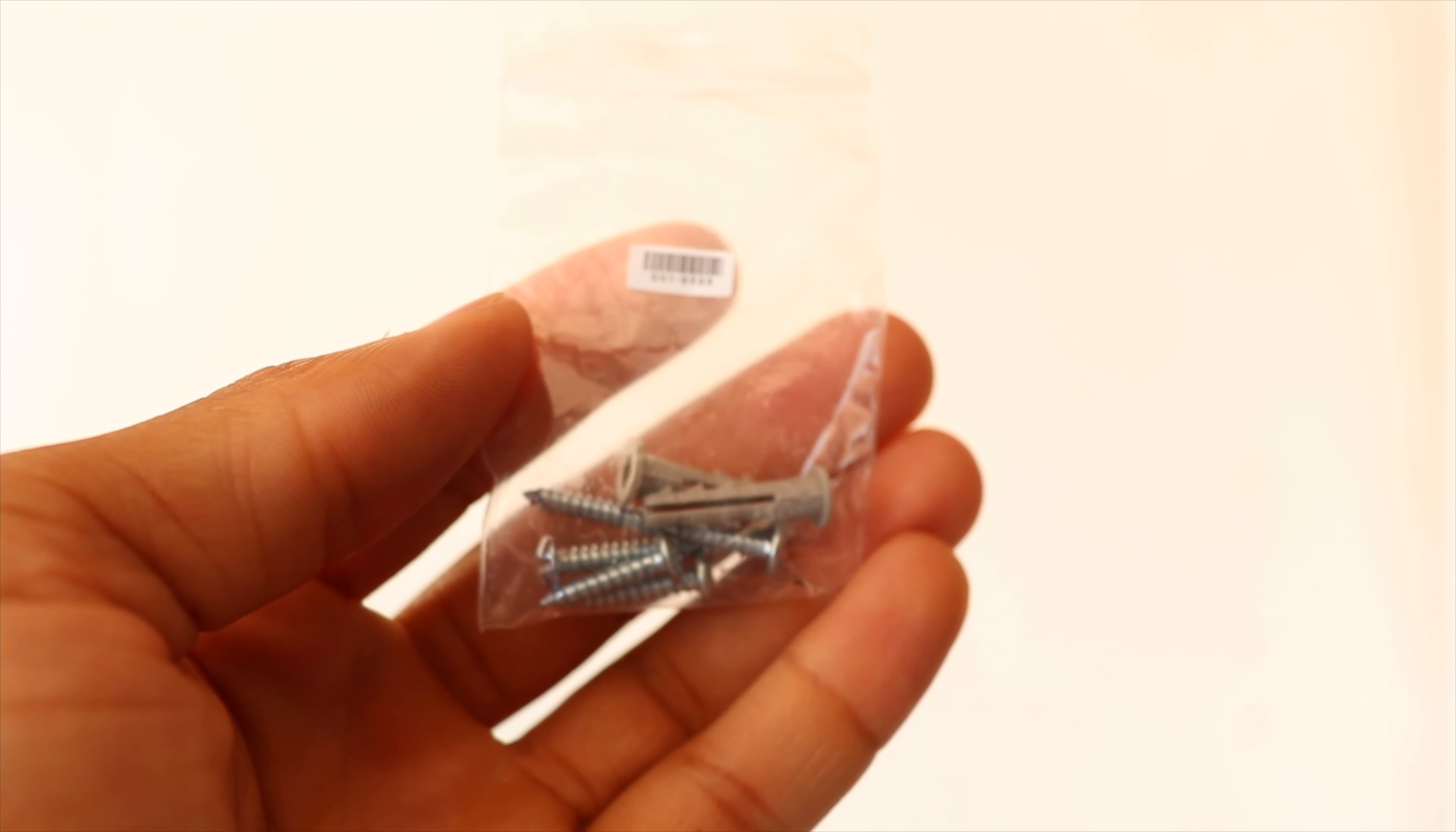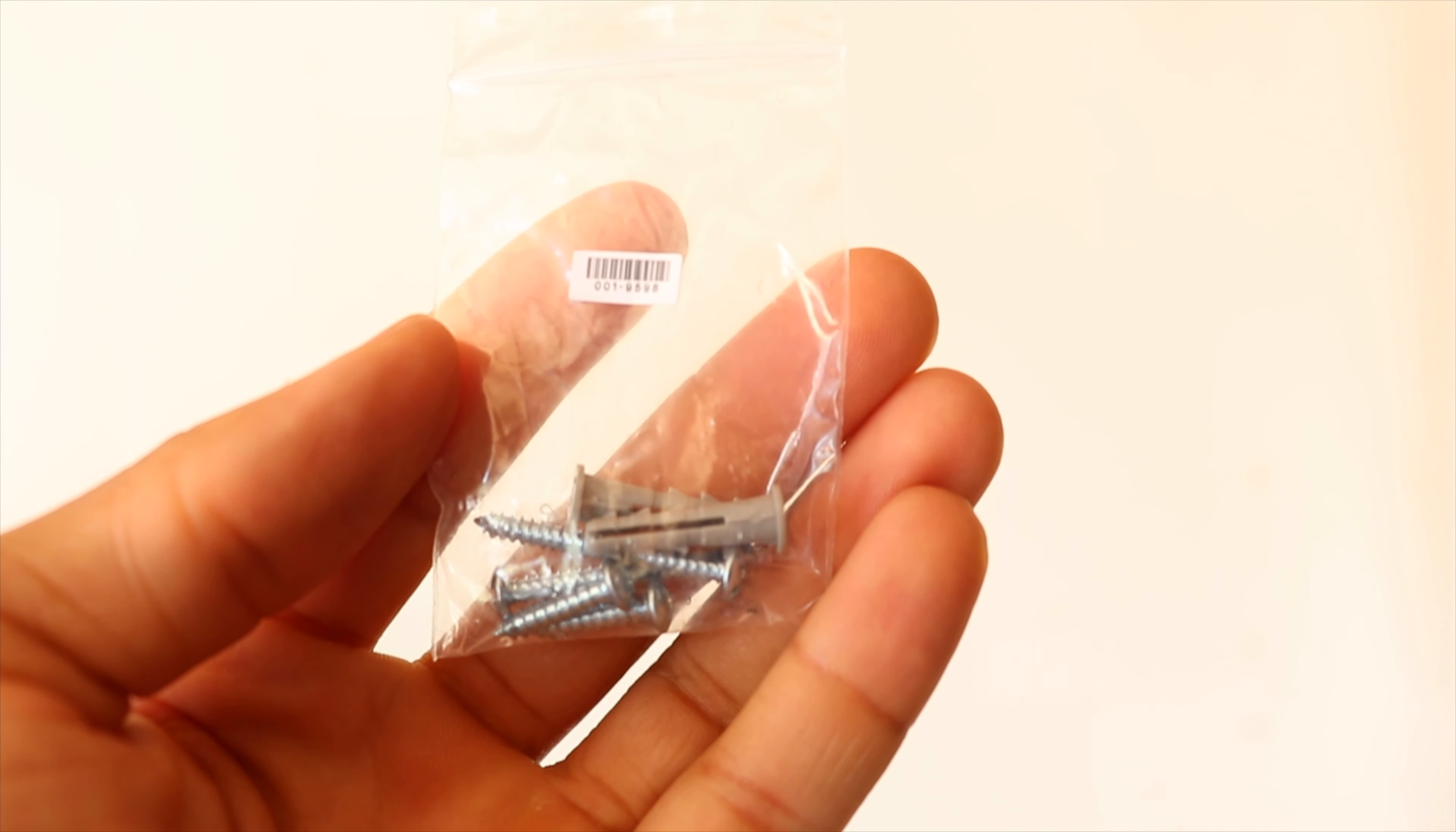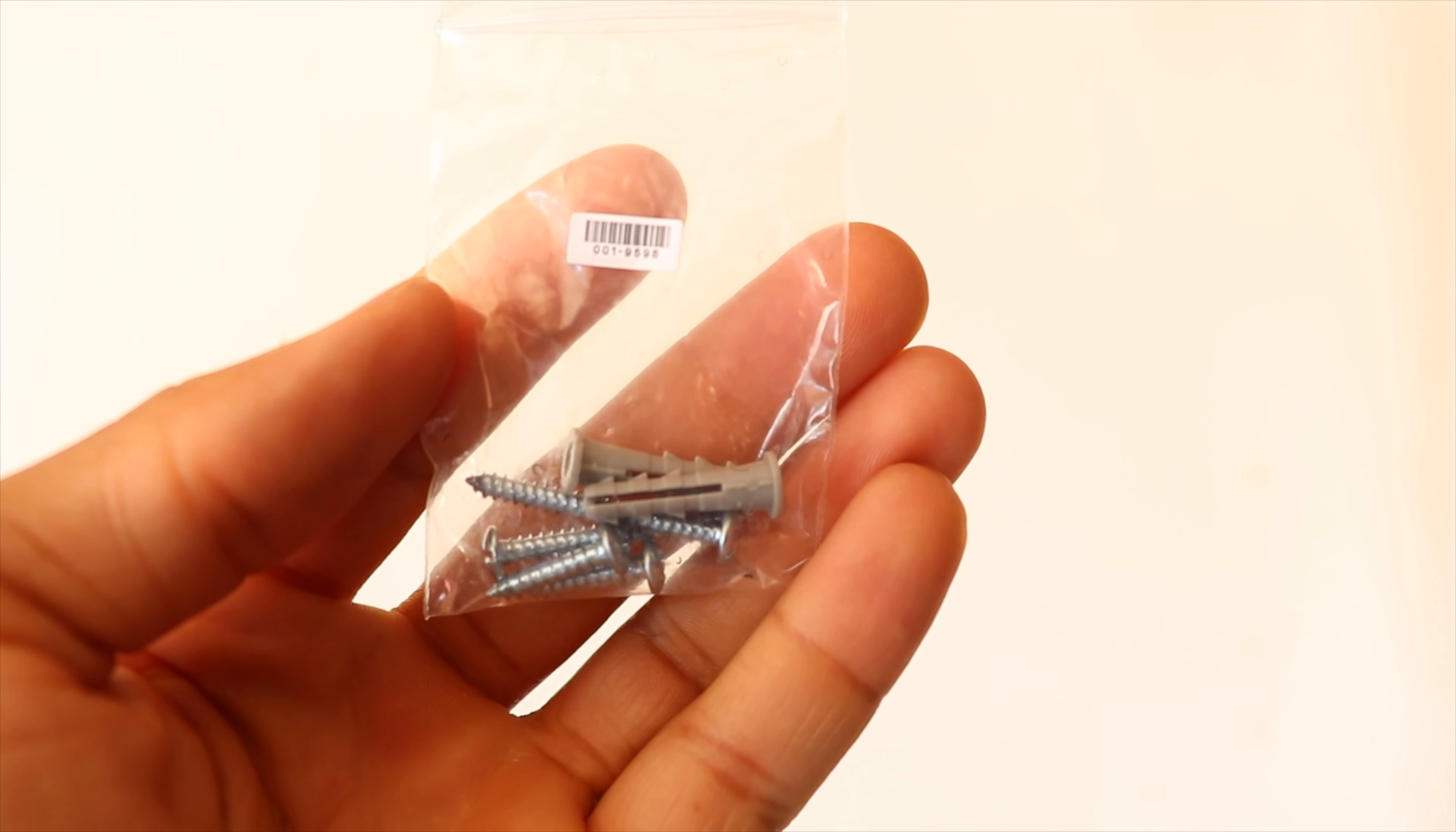So from there, it's time to grab the anchors and the screws so that we can install the mounting plate. If you're going to be installing it directly onto drywall, you will want to use the anchors. Otherwise, if you're going to install it directly onto wood or a stud, you can simply just use the screws.